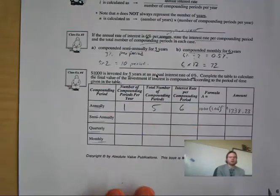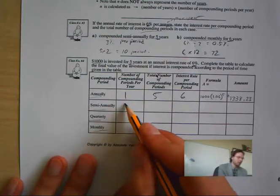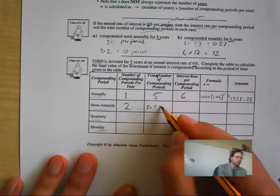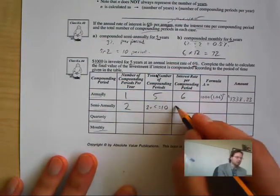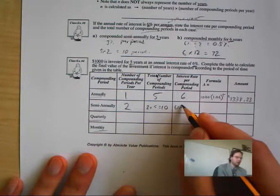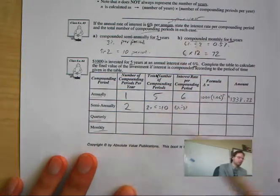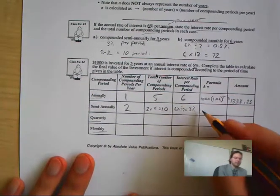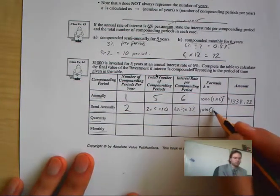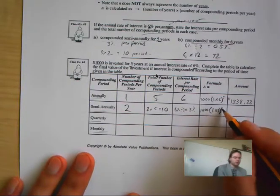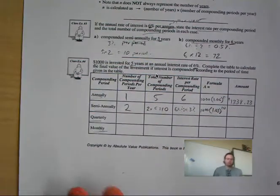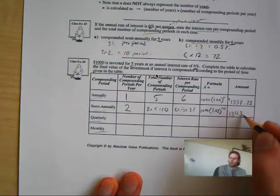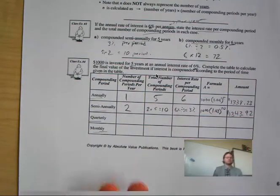Let us try semi-annually. Semi-annually is twice a year. The number of compounding periods is two times five, which equals ten. The interest rate is 6% divided by two, which equals 3%. So the formula is $1,000 multiplied by 1.03 to the power of ten. Plugging that into my calculator, I get $1,343.92.